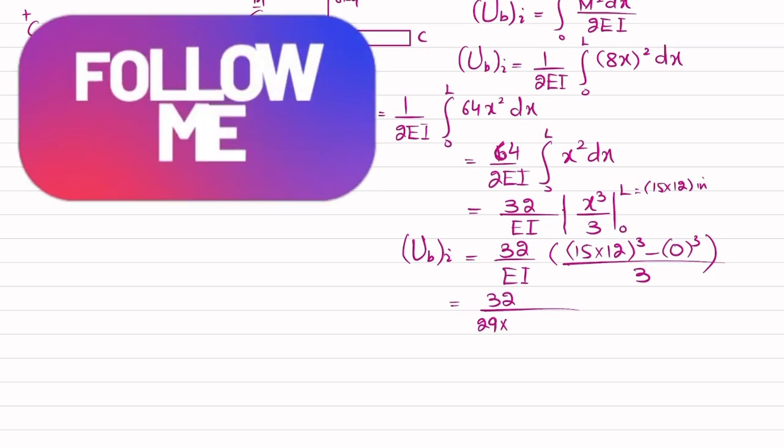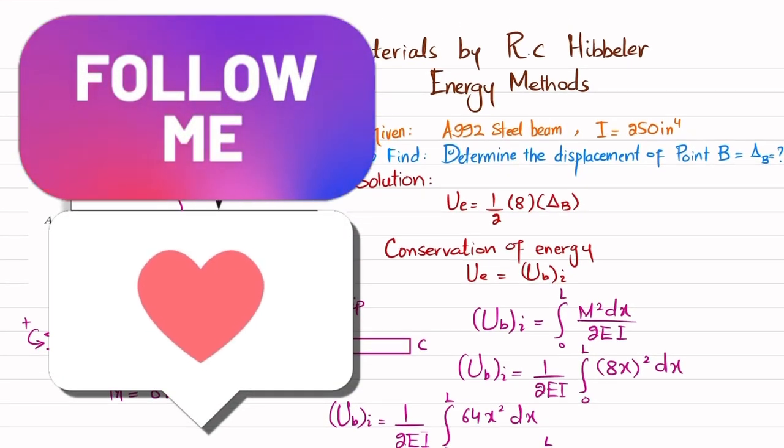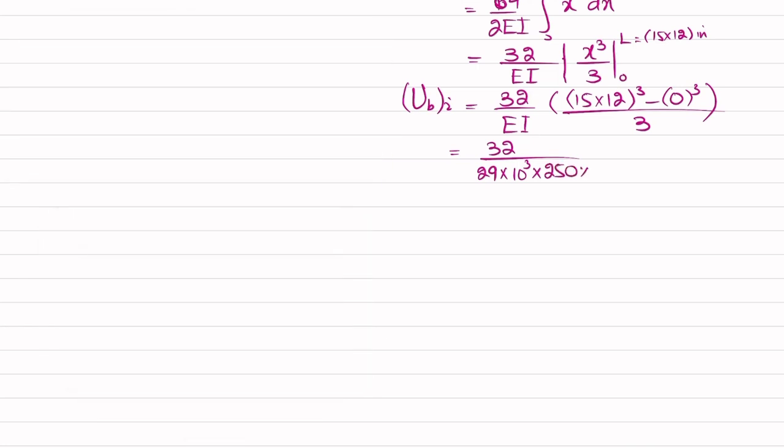So I will write the value of E over here: 32 divided by 29 times 10 to the power 3, multiplied by I, which is given as 250. So 250 multiplied by 3 times (15 multiplied by 12) cubed. At the end, what you will get is the strain energy due to bending.